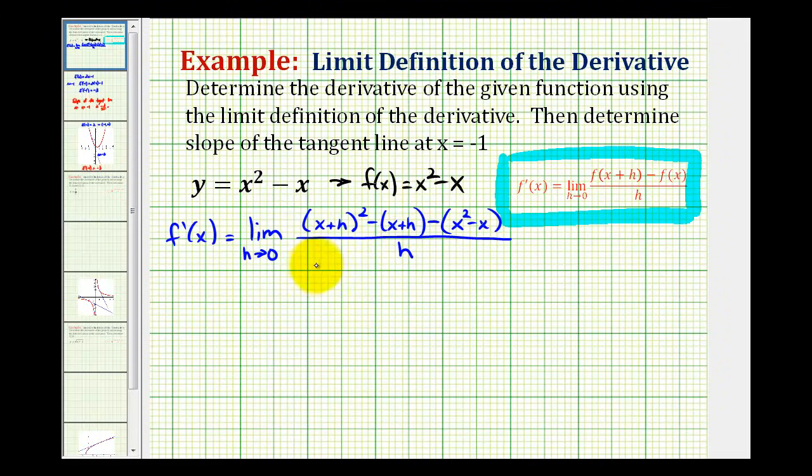And just to double-check before we do all this work, notice the numerator is f of x plus h minus f of x. So all of this is f of x plus h, and this is f of x. Now that we have verified it's set up correctly, we can start to simplify this quotient.